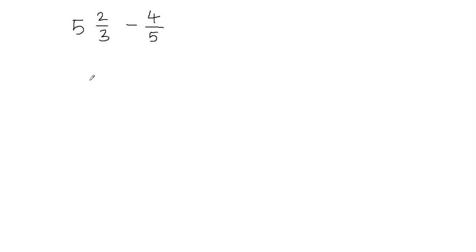The first thing we need to do is convert this mixed fraction into an improper fraction. Improper fractions are those fractions in which the number in the numerator is greater than the number in the denominator. And when we convert a mixed fraction into a fraction we always end up with an improper fraction.